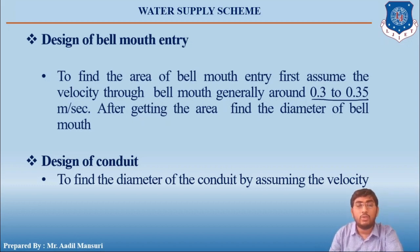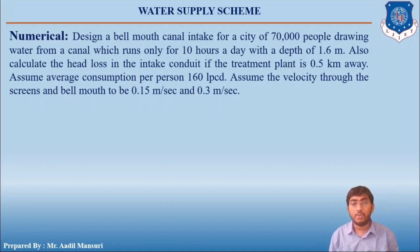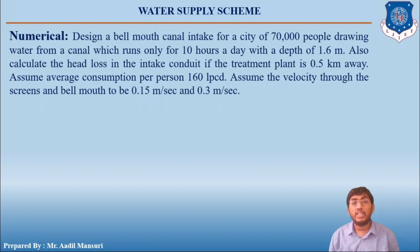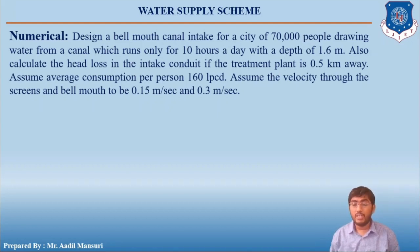Now for the numerical example: Design a bell mouth canal intake for a city of 70,000 people drawing water from a canal which runs only for 10 hours a day with a depth of 1.6 meters. Also calculate the head loss in the intake conduit if the treatment plant is 0.5 kilometers away. Assume average consumption of 160 liters per capita per day, velocity through screens of 0.15 m/s, and velocity through bell mouth of 0.3 m/s.